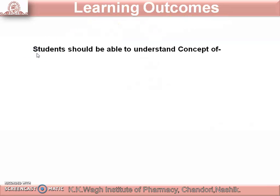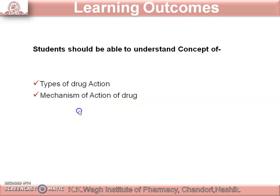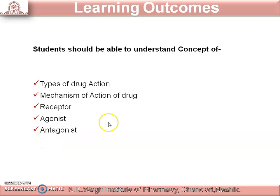The learning outcomes of today's session are: students should be able to understand the concept of types of drug action, mechanism of action of drug, receptor, agonist, and antagonist.